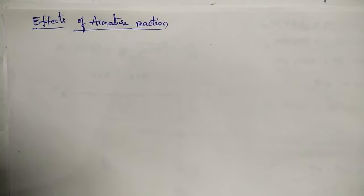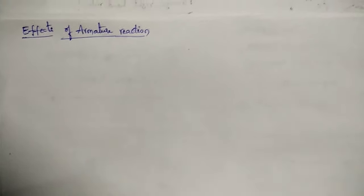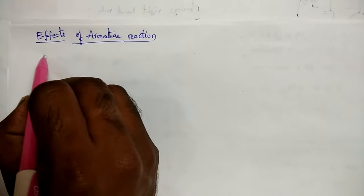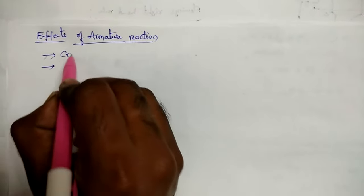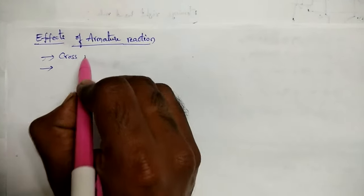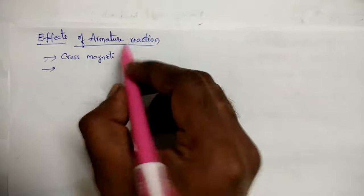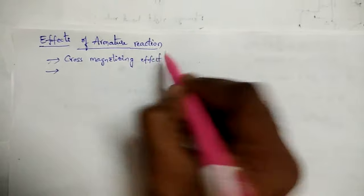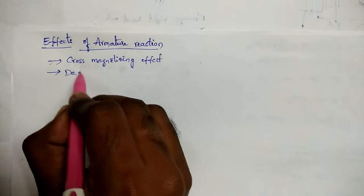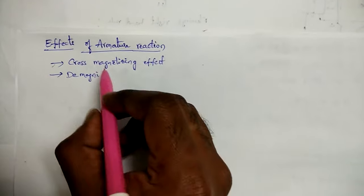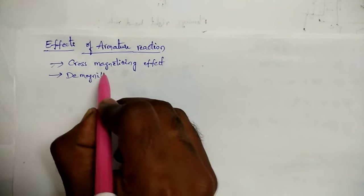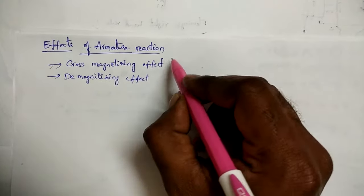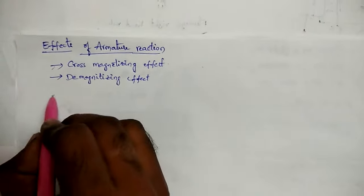Today we will see the effects of armature reaction. Because of armature reaction, two things will happen. First is the cross-magnetizing effect, which is nothing but distortion of the main field flux. The second is the demagnetizing effect, which means a reduction in the main field flux.